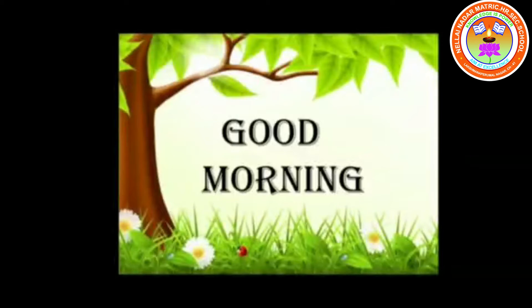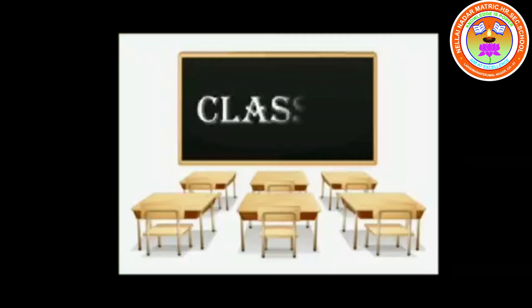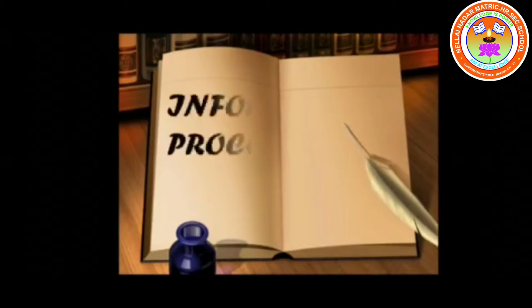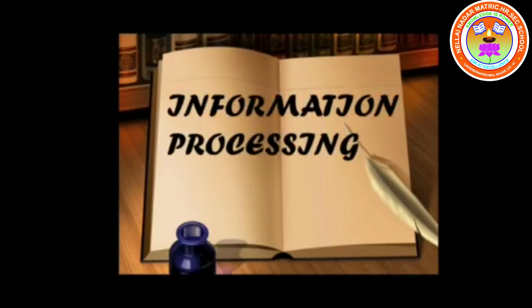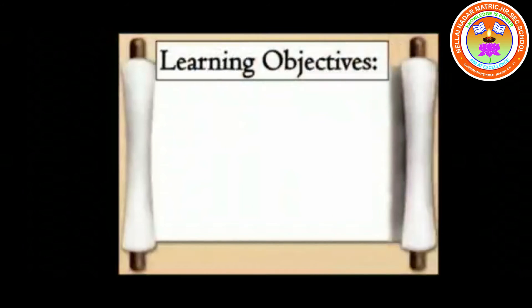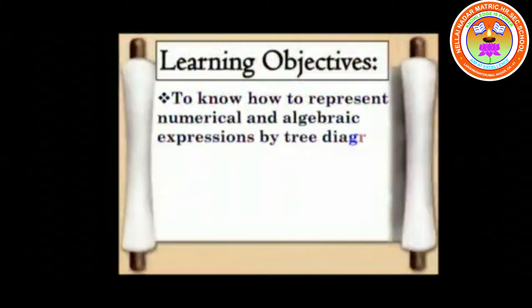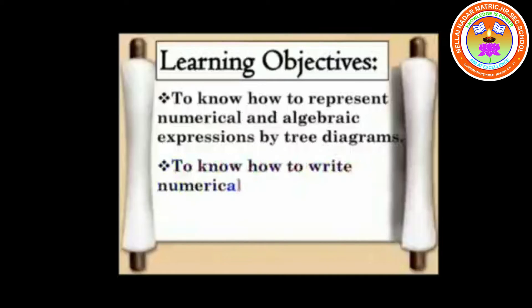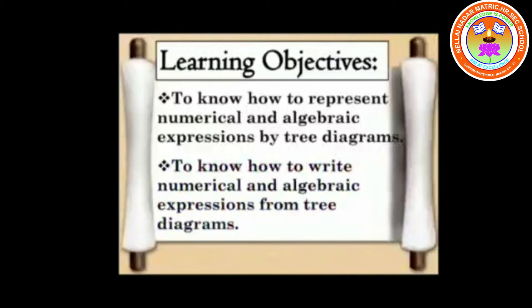Good morning children. Class 6, Chapter 5: Information Processing. Learning objectives: to know how to represent numerical and algebraic expressions by tree diagrams, and to know how to write numerical and algebraic expressions from tree diagrams.